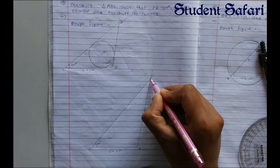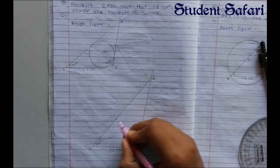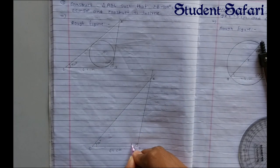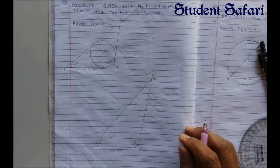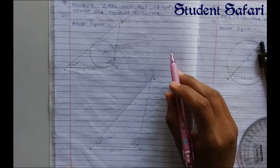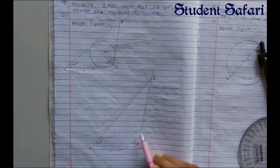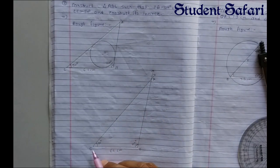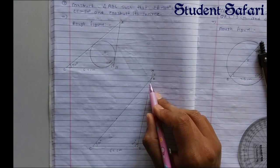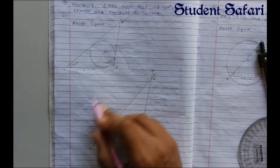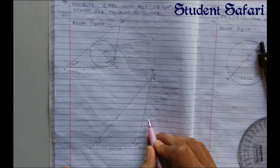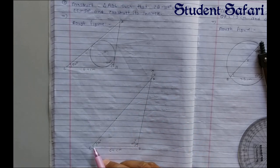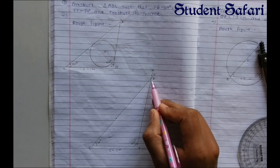Extend line C to get our point A. This angle is 50 degrees and this angle is 100 degrees. Now we need to draw the incircle — the circle inside the triangle. To draw the incircle we bisect any two angles of the given triangle. To draw the circumcircle we bisect any two sides of the given triangle.